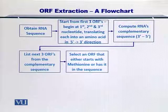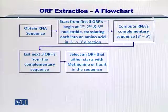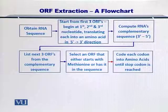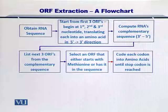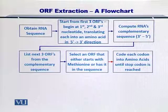Now you have to look at all six open reading frames, or ORFs, and try to find where A, T, and G exist, which actually code for methionine. You then code each codon into amino acids until the stop codon is reached, because that will mark the end of the protein.